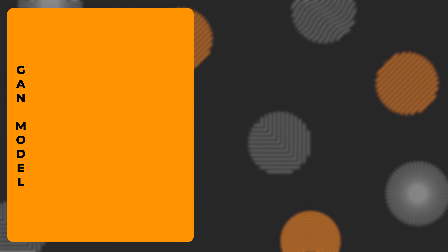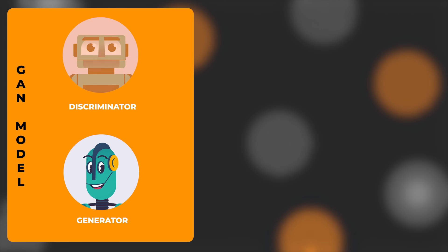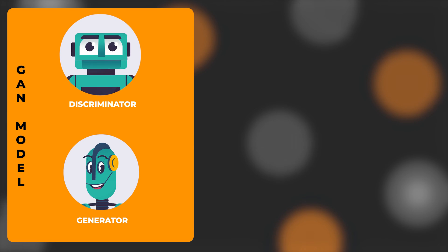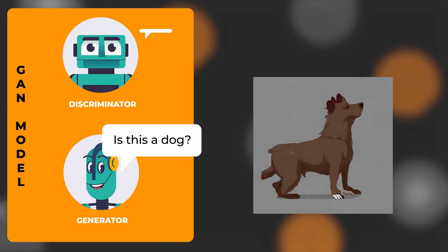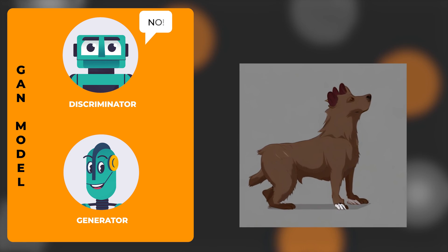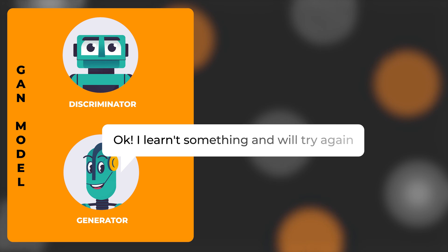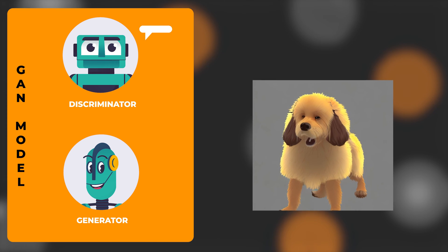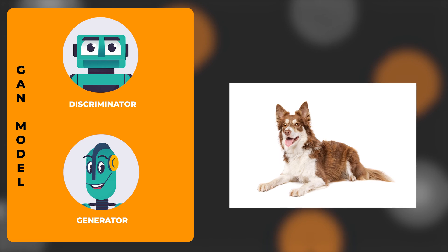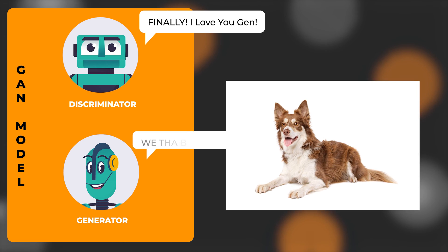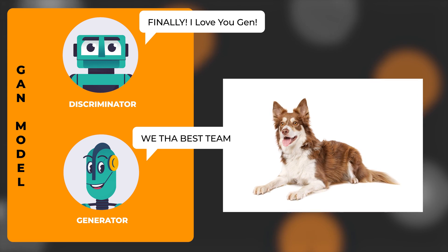Here's the deal with GAN models. At the heart of it, there are two machine learning models: a generator and a discriminator. The generator creates new data, and the discriminator evaluates the data to determine if it's real or fake. So let's say the generator is trying to create a picture of a dog. It generates a picture, and the discriminator checks if it looks like a real dog. If it's fake, the generator uses the feedback to create a better picture next time. This goes back and forth until the generator creates a picture that the discriminator can't distinguish from a real dog. At this point, the generator has learned how to create a realistic picture of a dog.